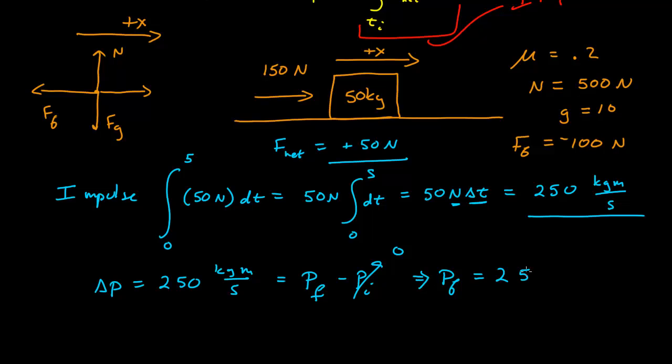to 250, this leads to final momentum 250 kilograms meters per second, and then I could find the final velocity, which is the momentum over the mass, then would be 5 meters per second, and this is in the positive x direction. And so